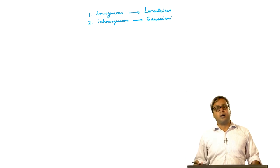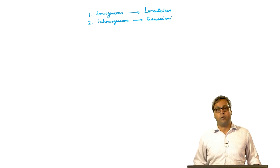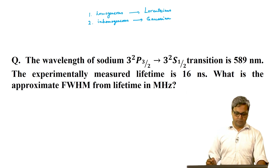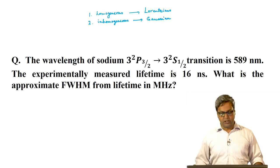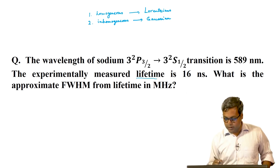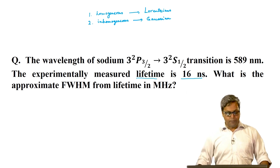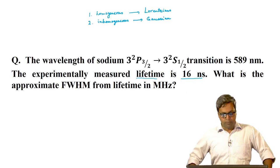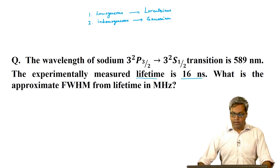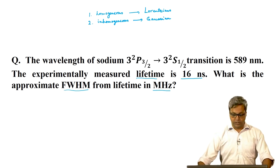Before we start a new topic in today's lecture, let us first look into a problem that involves line shape functions. We have a question: the wavelength of a certain transition of sodium is 589 nanometers. The experimentally measured lifetime is 16 nanoseconds. The question is: what is the approximate full width at half maximum (FWHM) from lifetime, and you have to find the FWHM in megahertz.